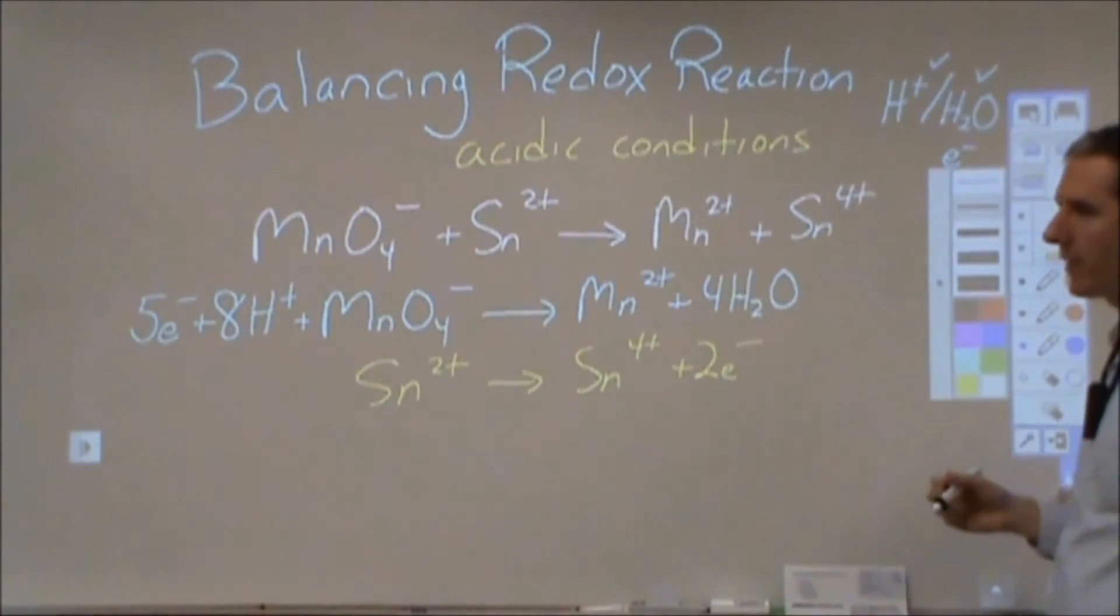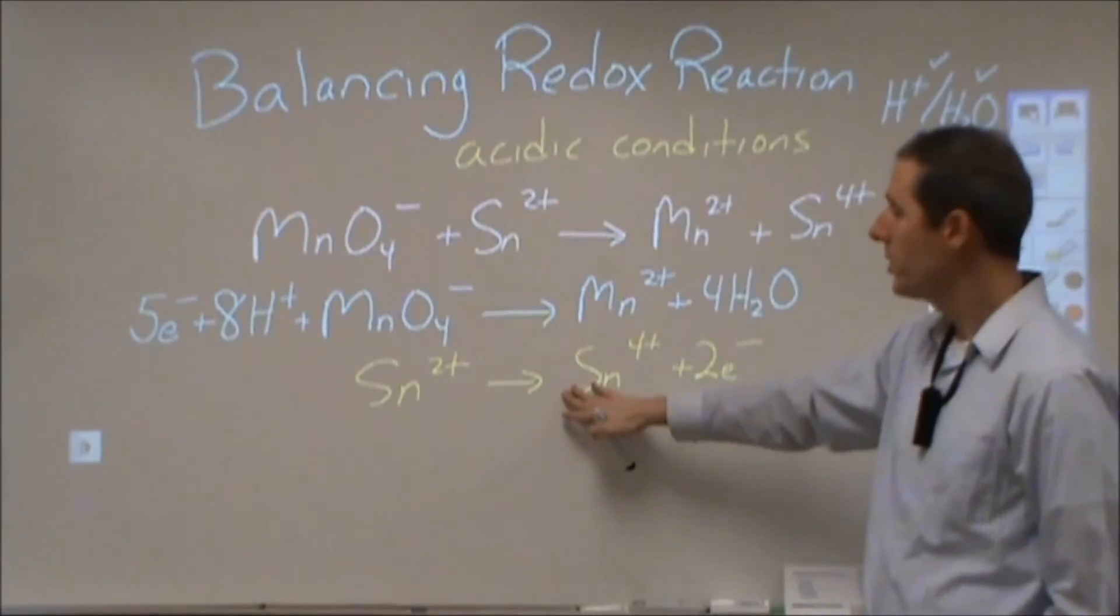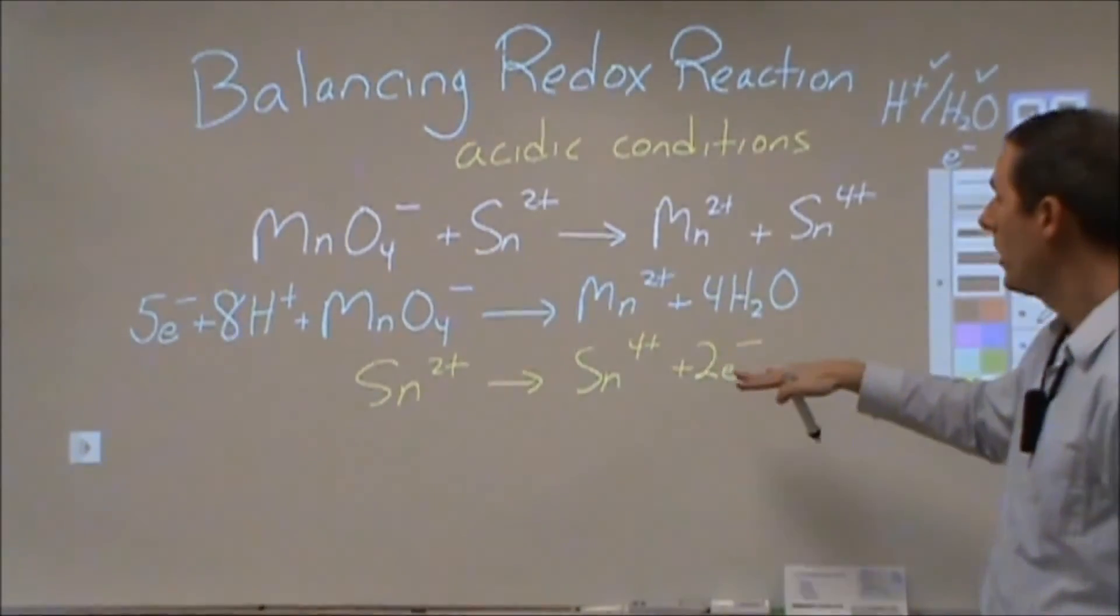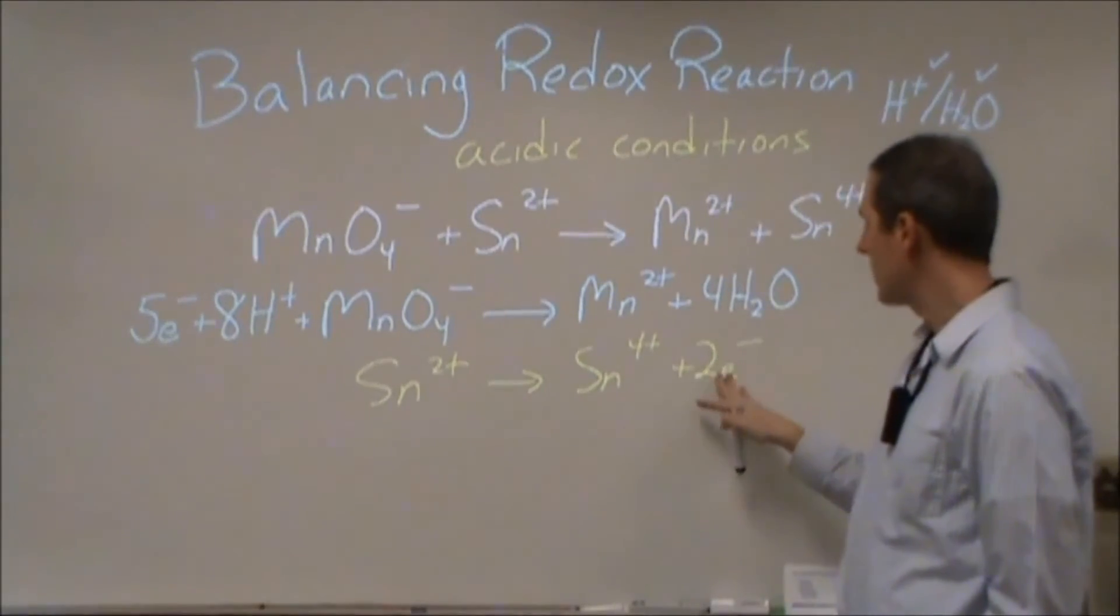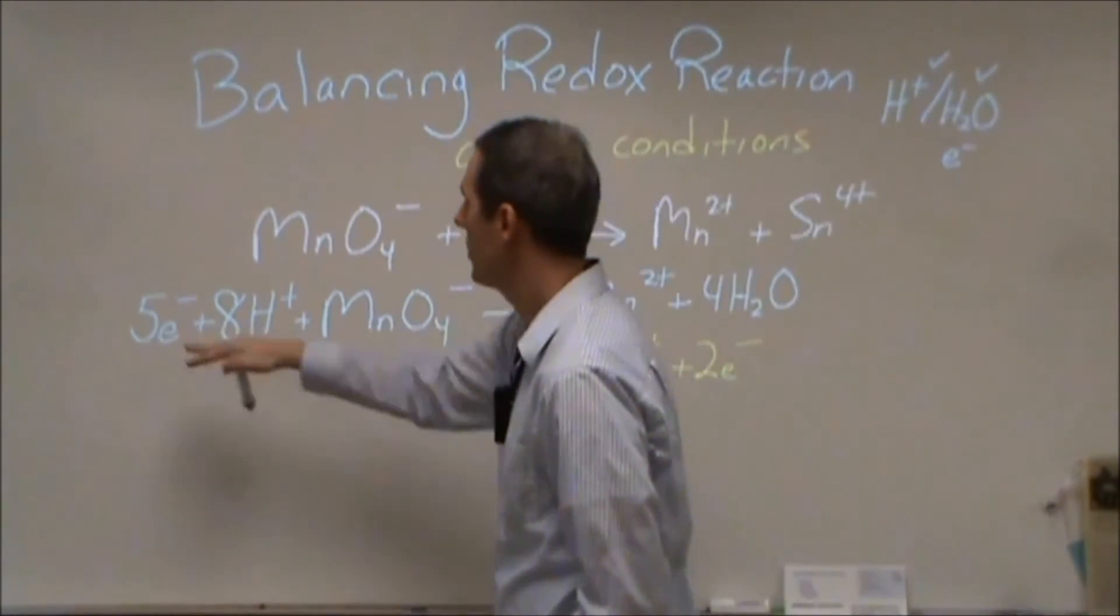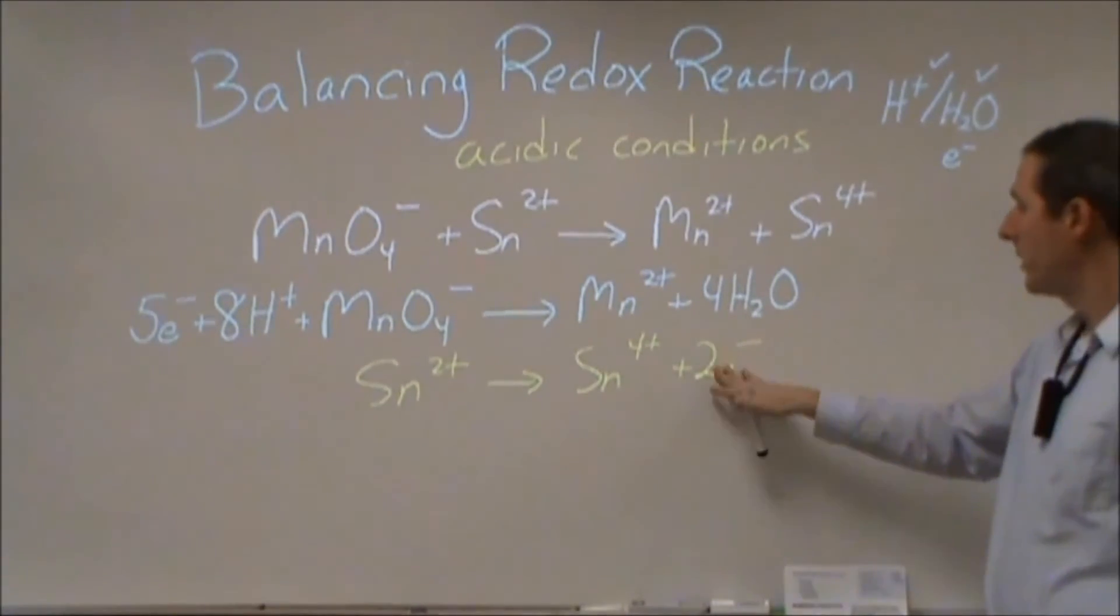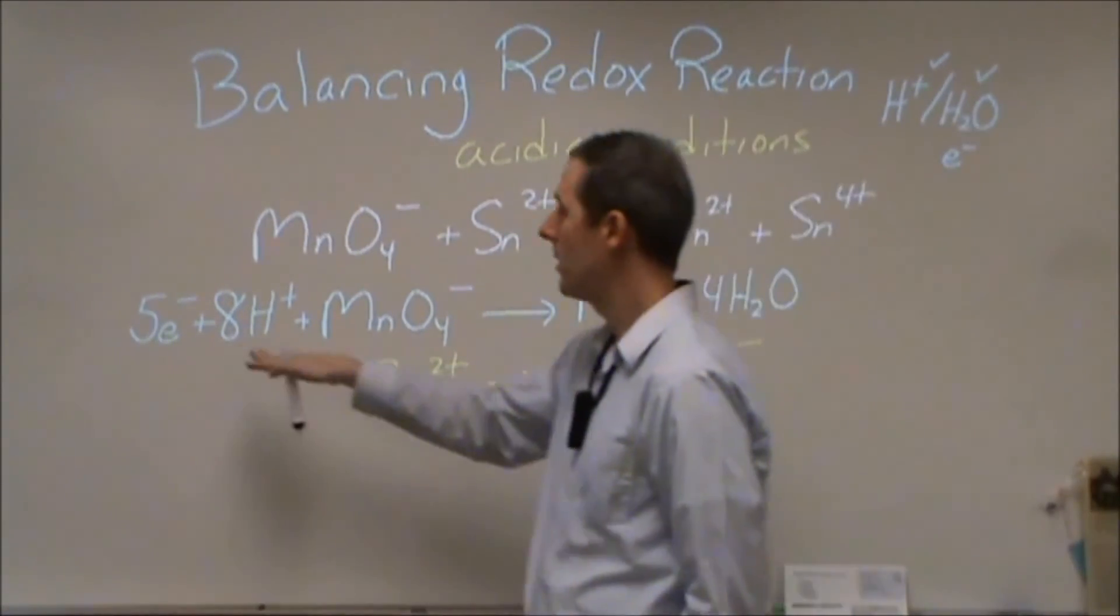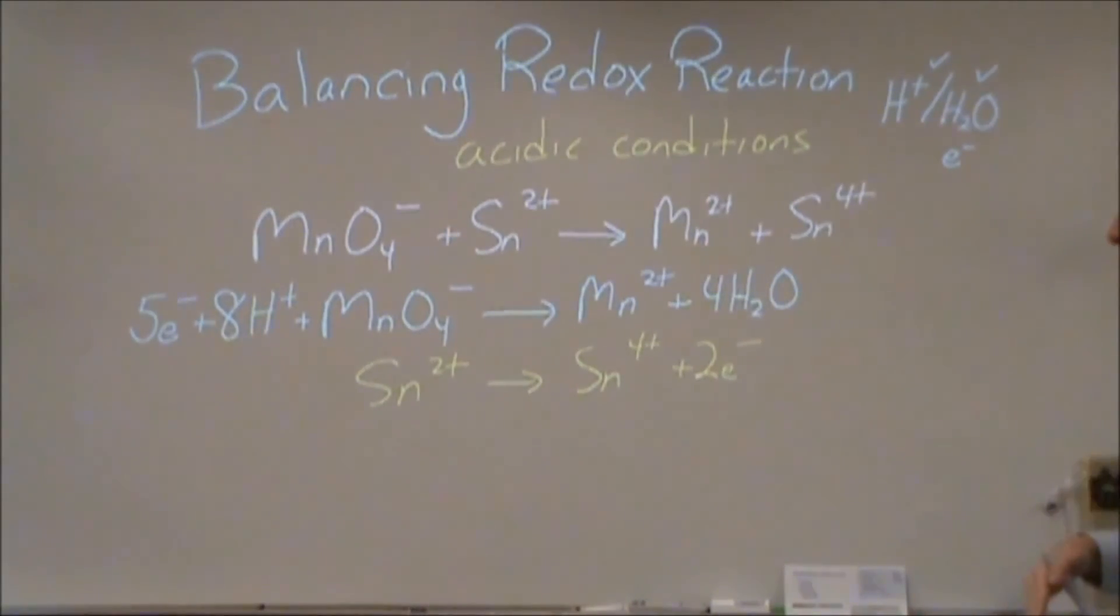Now the reason why we're adding these electrons is because we need to recombine the reduction half-reaction with the oxidation half-reaction to give a total equation. And when we do that, we need the charge to balance. And the easiest way to do that is to take these electrons that are exchanged and make them the same so that they cancel out. If we turn this into ten electrons, and we turn this into ten electrons, then when we combine the two reactions our charge will balance.